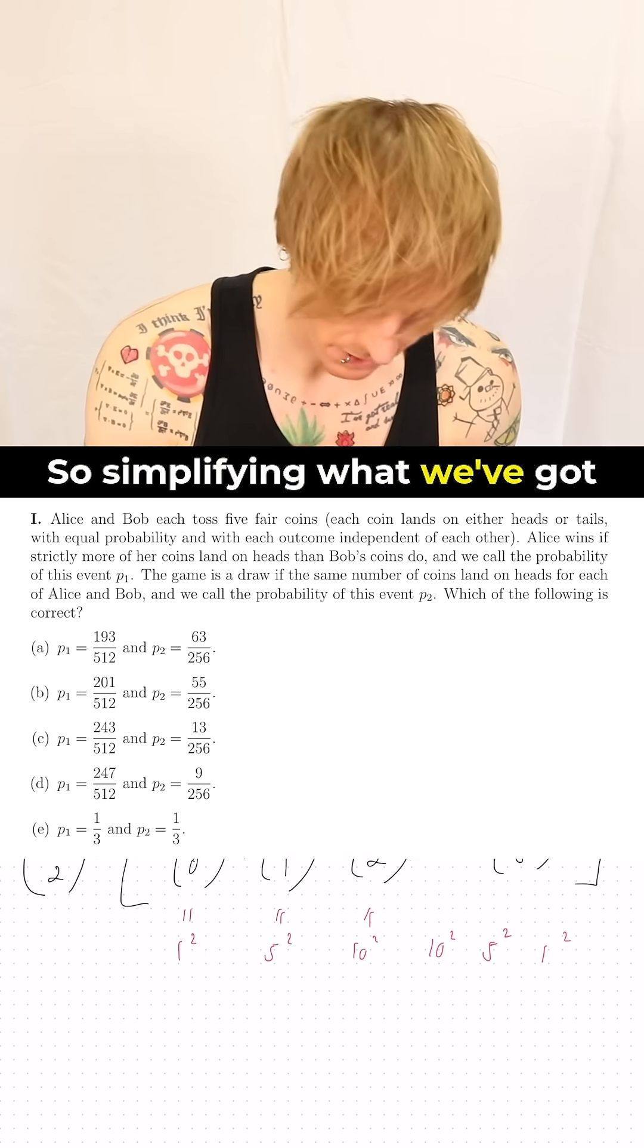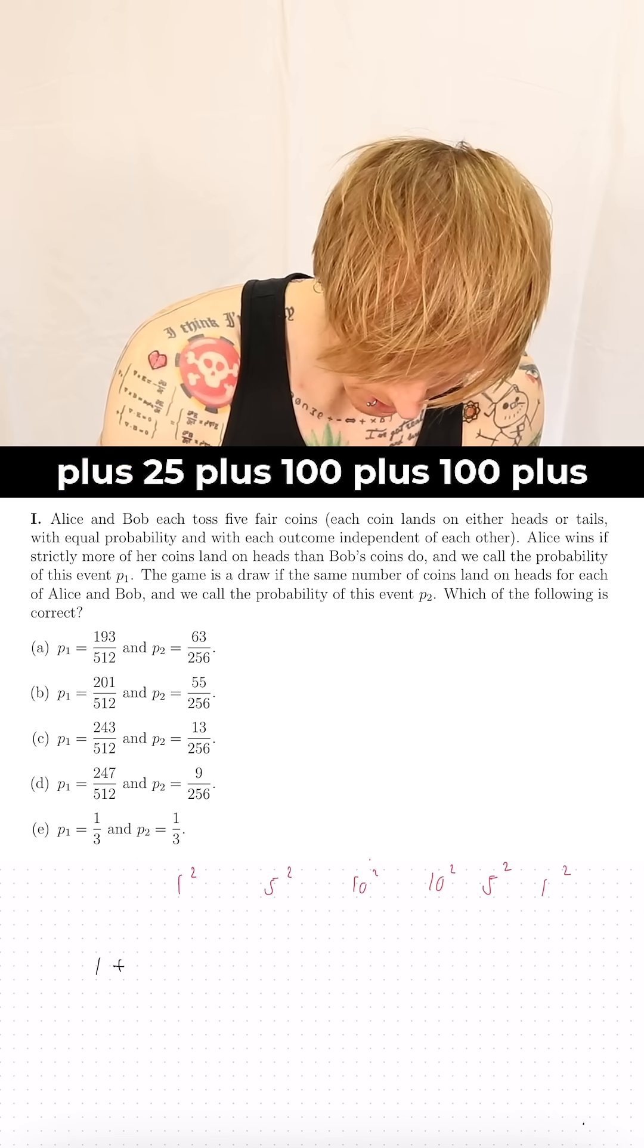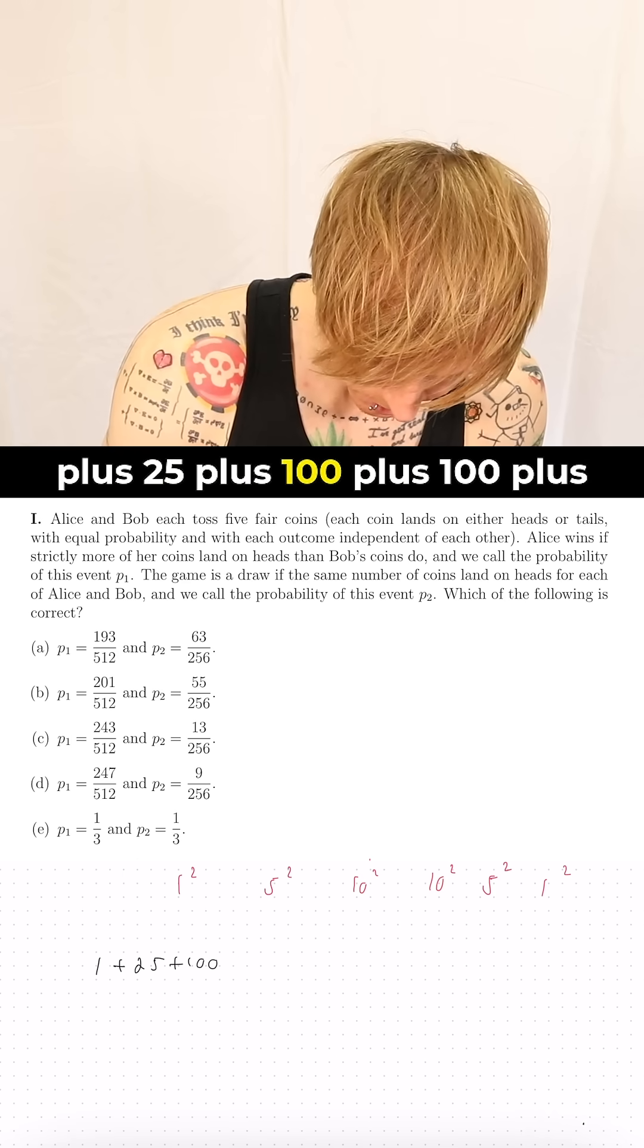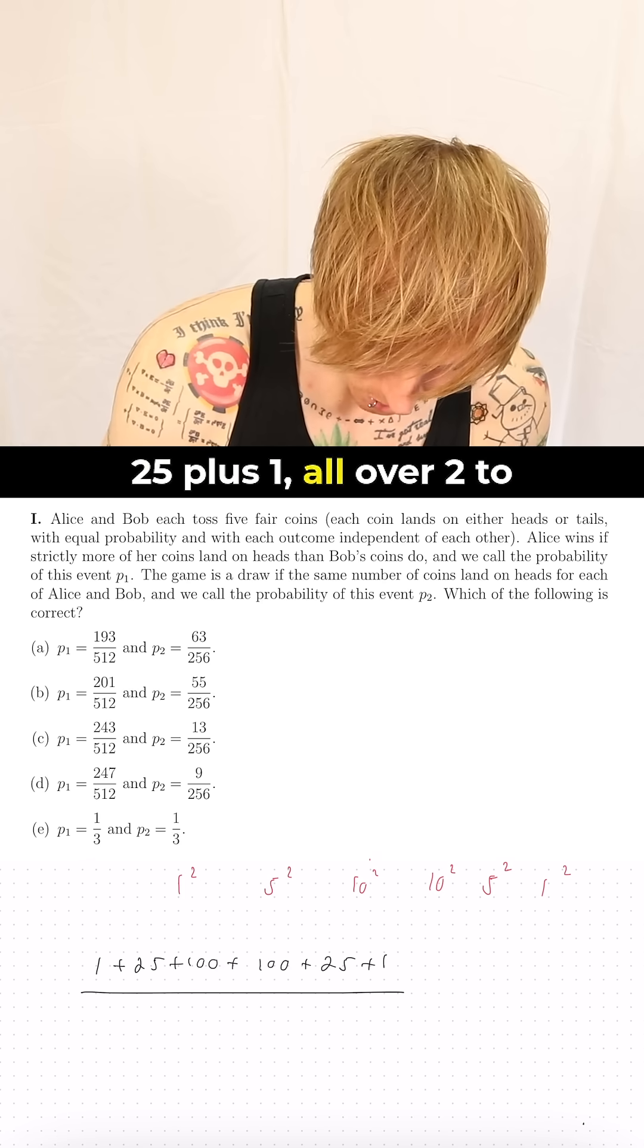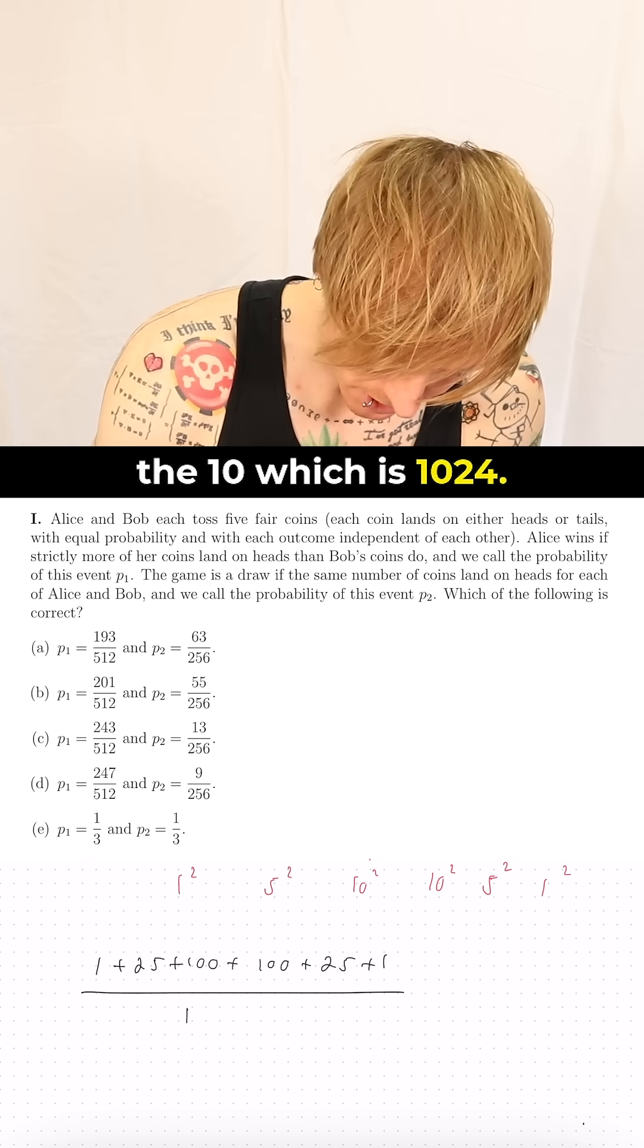So simplifying what we've got here is actually going to be 1 plus 25 plus 100 plus 100 plus 25 plus 1 all over 2 to the 10 which is 1024.